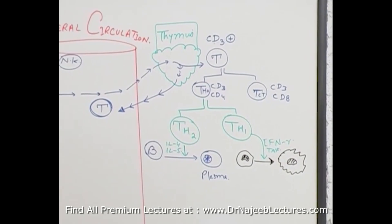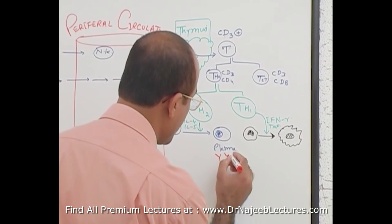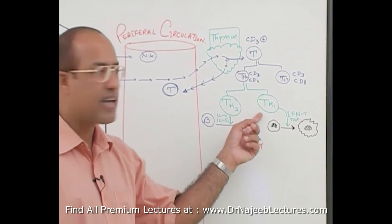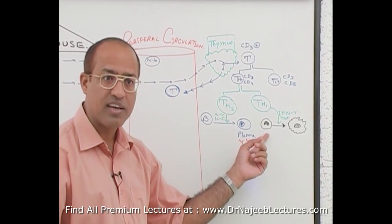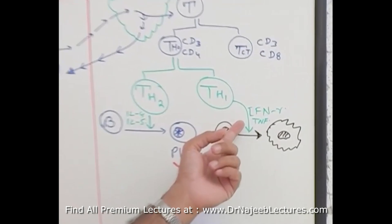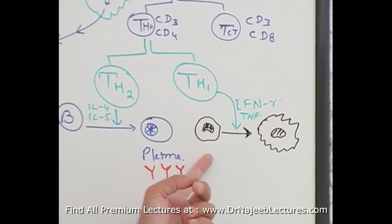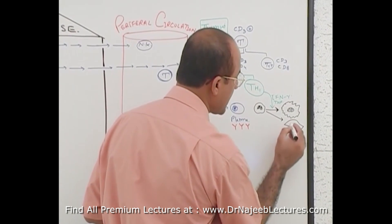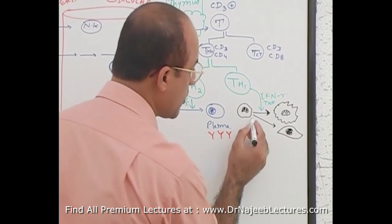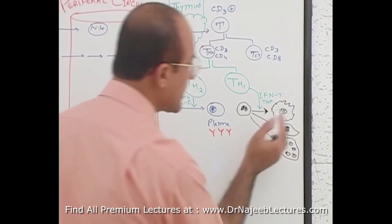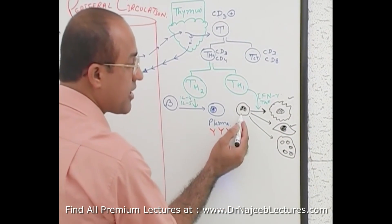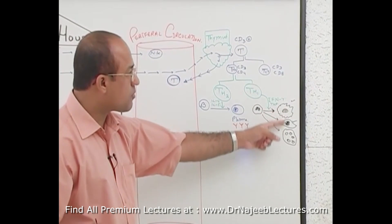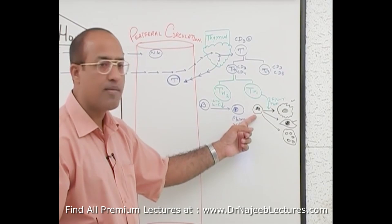Plasma cells are active B cells that actively produce antibodies. T helper 1 cells help monocytes and macrophages by producing gamma interferon and tumor necrosis factor. They can convert monocytes into active macrophages, and further into epithelioid cells or giant cells. Activated macrophages, epithelioid cells, and giant cells are all produced by the action of gamma interferon and tumor necrosis factor on macrophages.